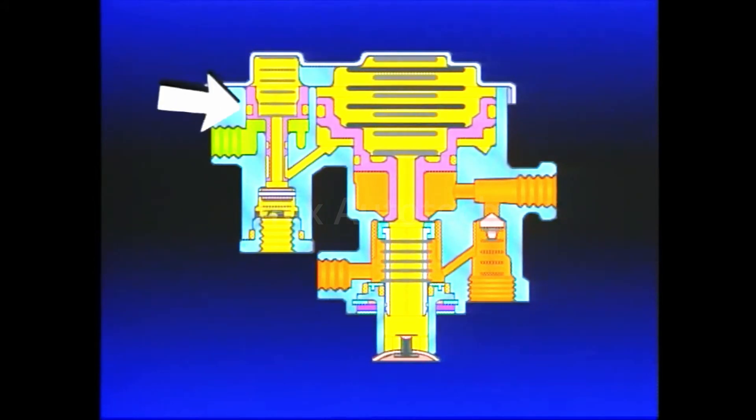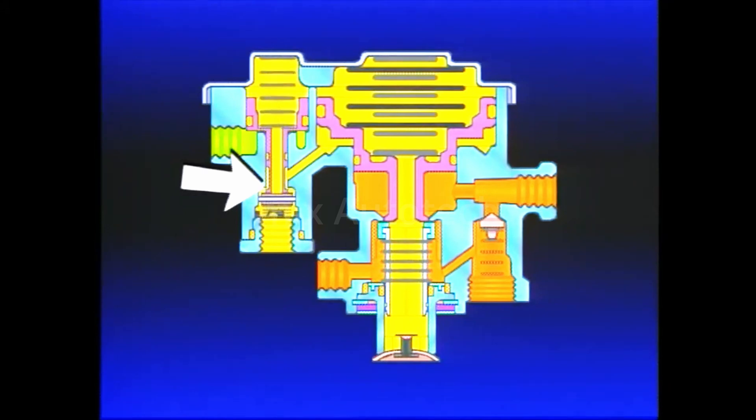This causes Piston A to move down due to spring force, sealing the open exhaust passage, and with continued movement to unseat the inlet valve.